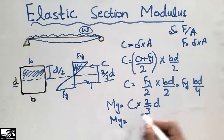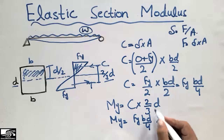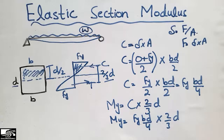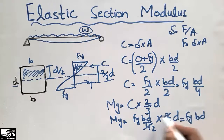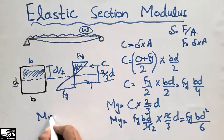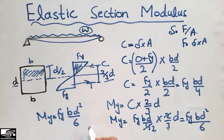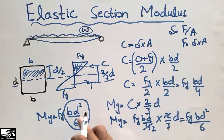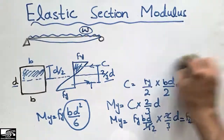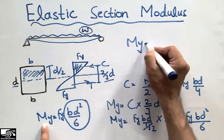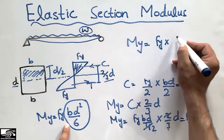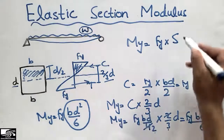Substituting C = Fy·B·D/4 into My = C × (2/3·D), we get My = (Fy·B·D/4) × (2/3·D). Simplifying: the 2 cancels with 4 to give 2 in the denominator, and multiplying D × D gives D², so My = Fy·B·D²/6. This geometric quantity B·D²/6 is represented by S, and we write My = Fy × S.